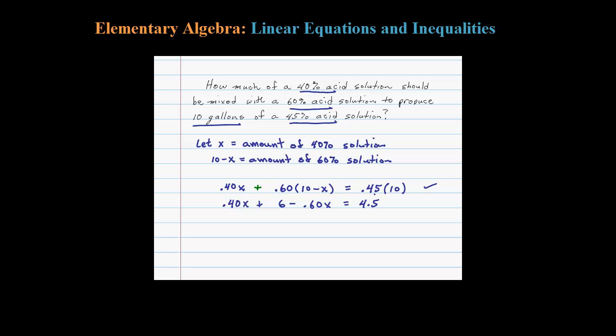.60 times 10 is 6, equals 4.5. Now we have same side like terms here, okay? So negative .2X, that's .4 minus .6, plus the 6 equals 4.5. Now let's subtract 6. Don't be afraid of this negative; the math will take care of it. Negative .2X equals negative 1.5.